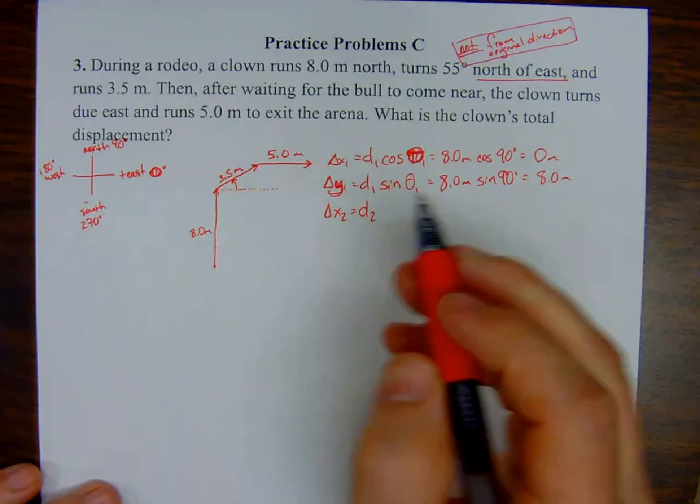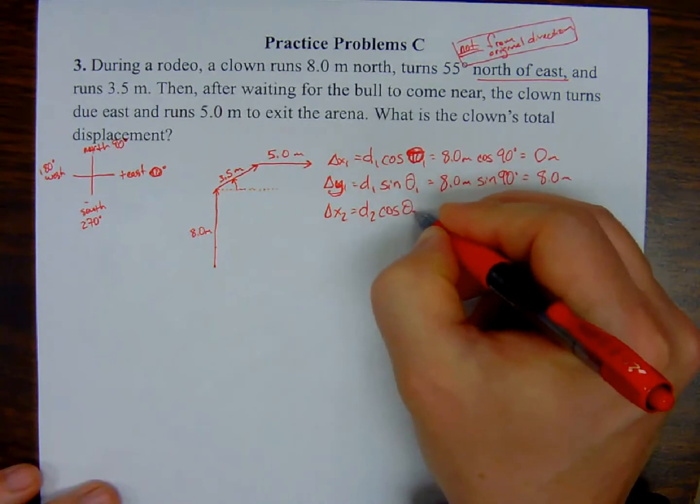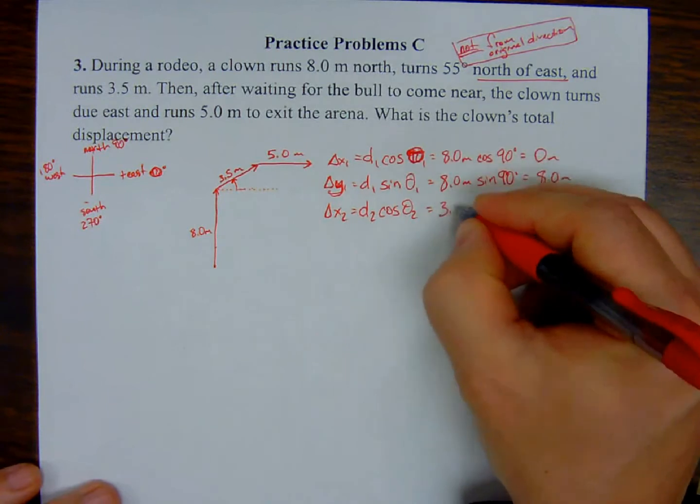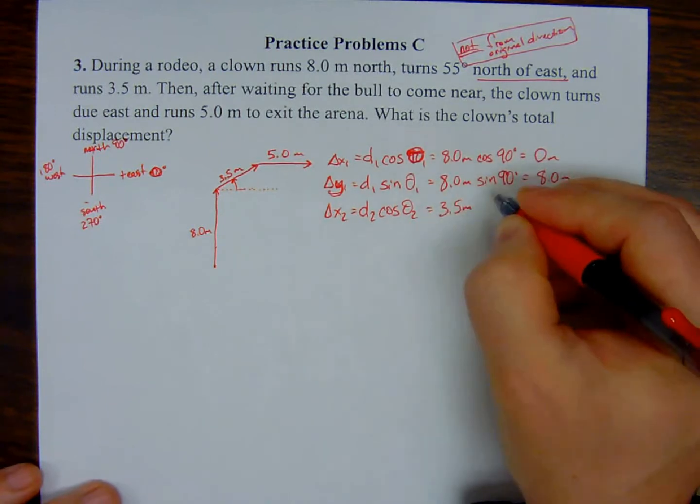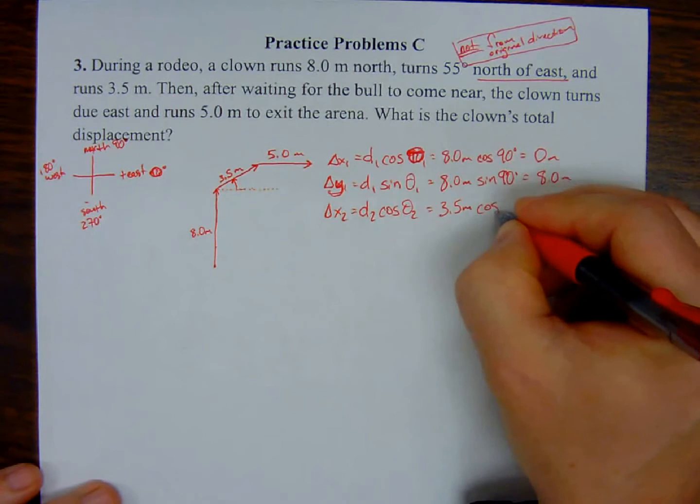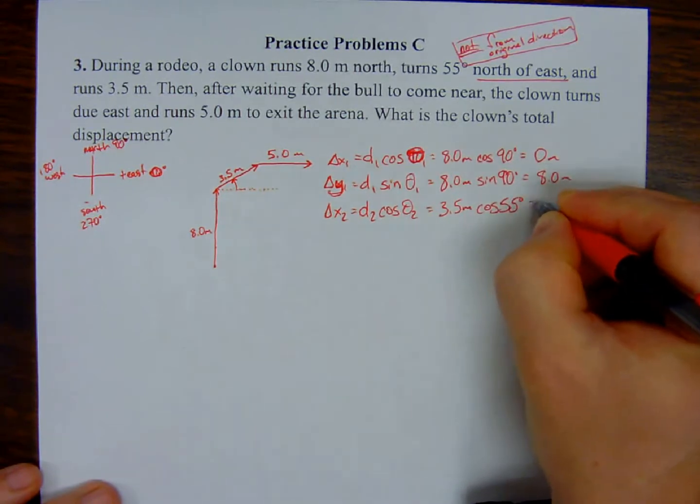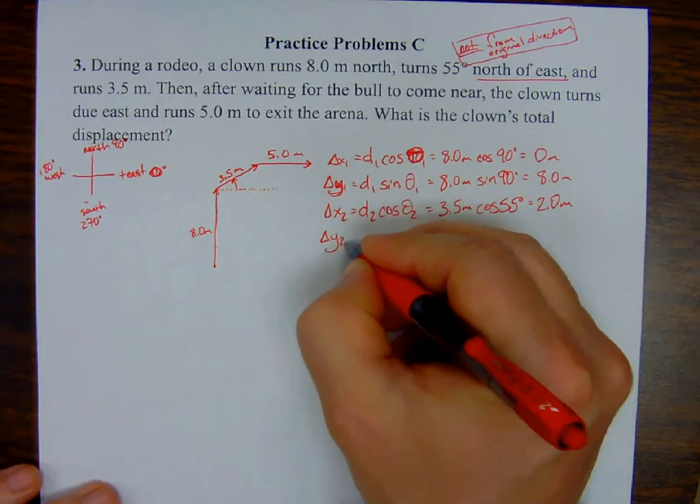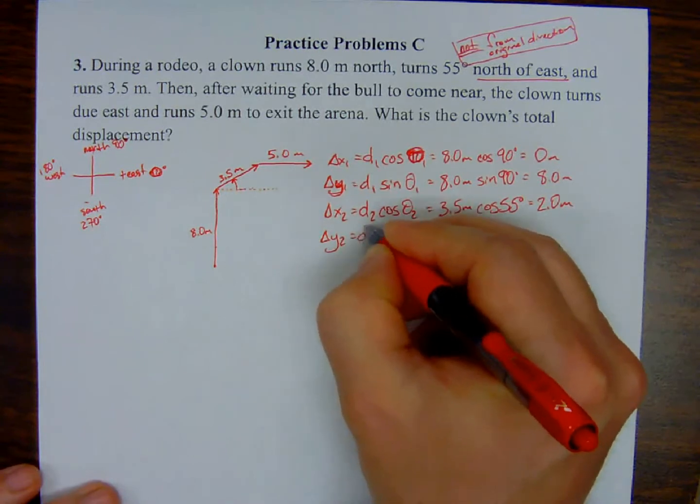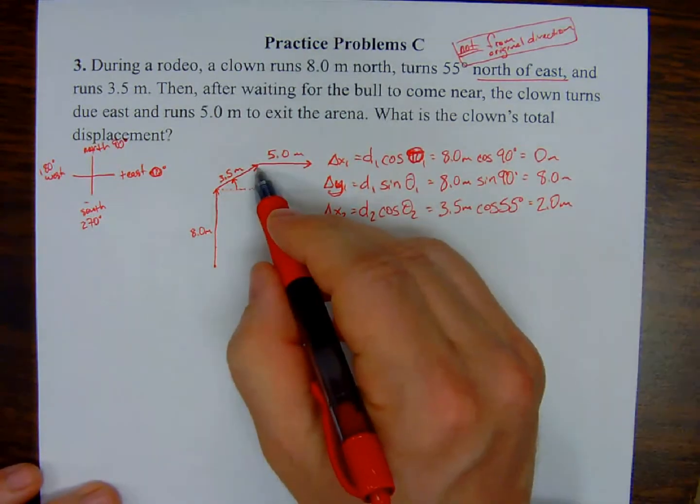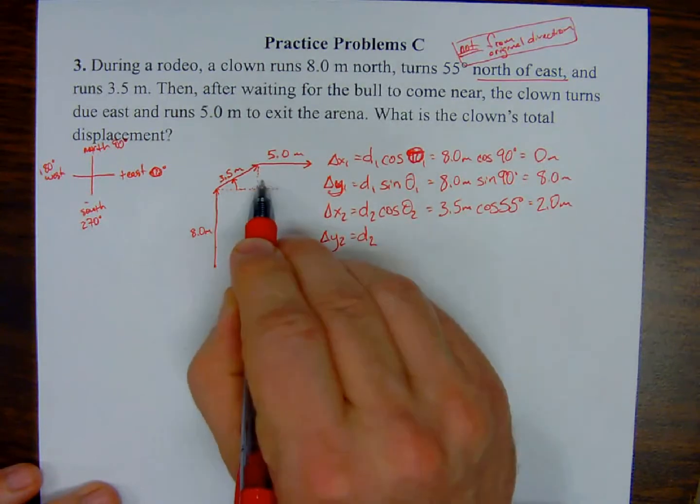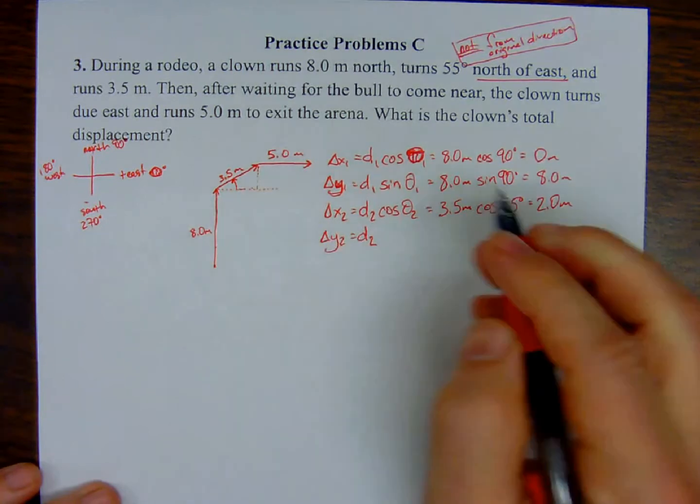Now the y component for that second triangle. Again, here's that y component. So again, here's the angle, opposite. I'm looking for the opposite, that's the y component over hypotenuse. So that tells me sine of the second angle. So that ends up being 3.5 meters times the sine of 55 degrees, is the angle on that second triangle. And calculator tells me two significant figures, 2.9 meters.